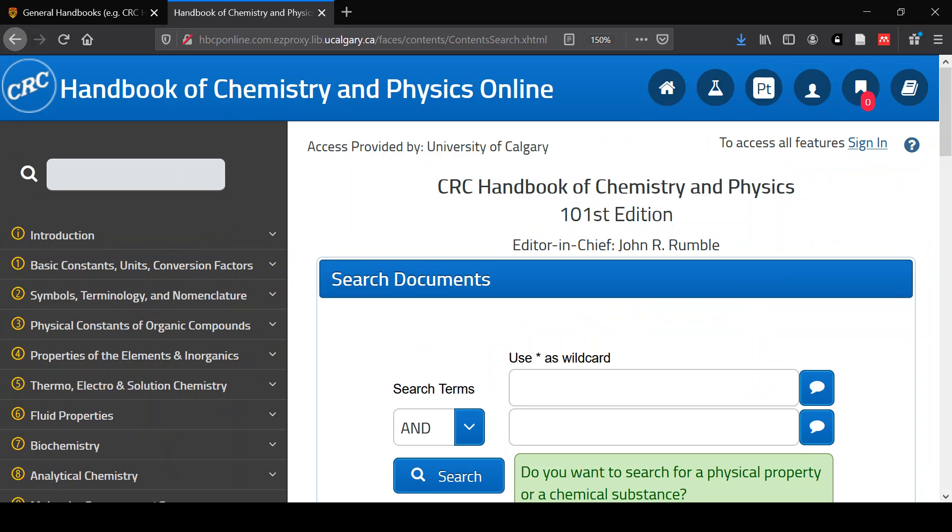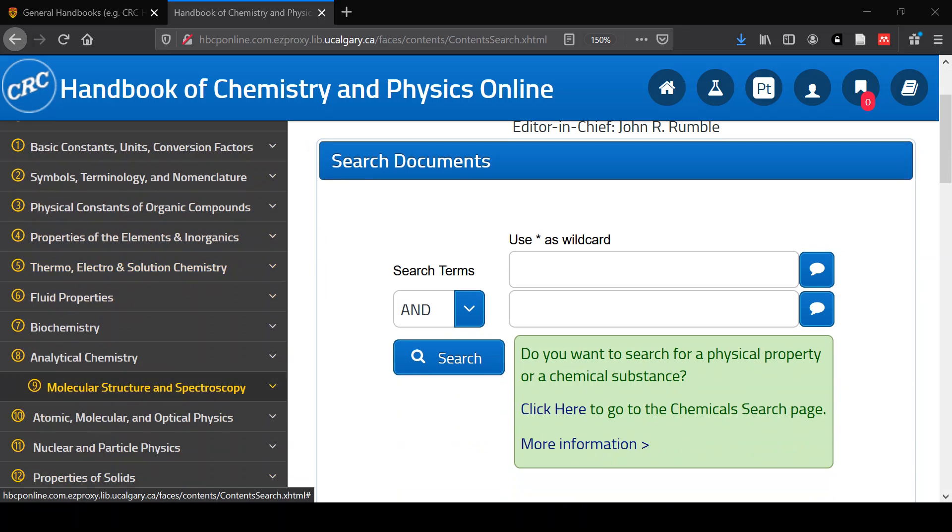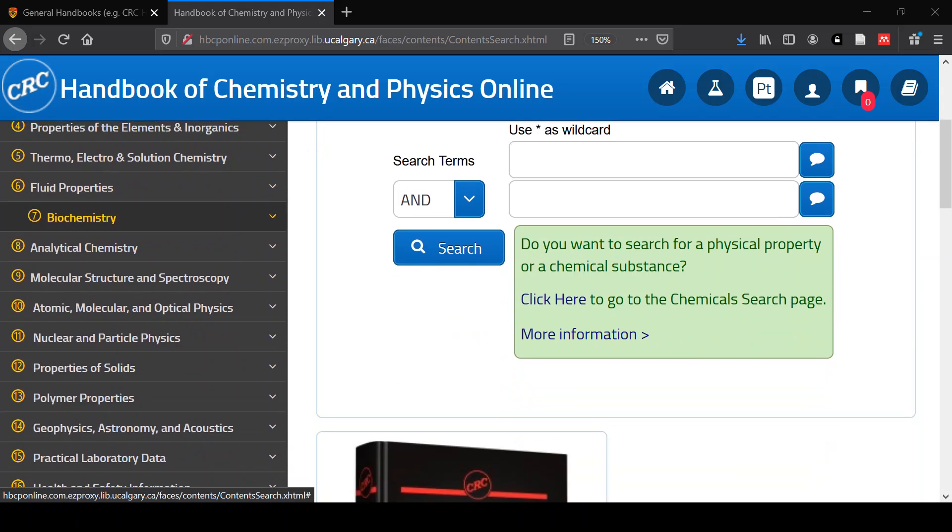The book is organized essentially by property type, although there are tables for organic compounds and for inorganics. If you know the property that you're looking for, just go through navigating the table of contents until you find it.